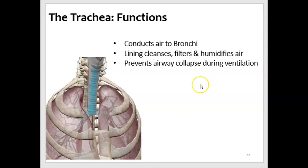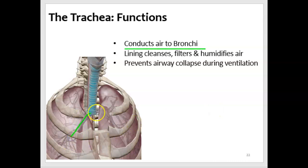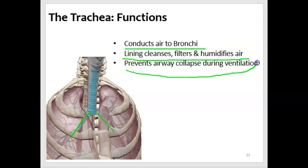The next structure is the trachea, part of the lower respiratory tract conducting zone. Its primary function is to conduct air to the two main bronchi, one to each lung, but its lining also cleanses, filters, and humidifies air just like the entire conducting zone. Because of the presence of cartilage — much like the larynx — it prevents airway collapse, which is most important during exhalation.